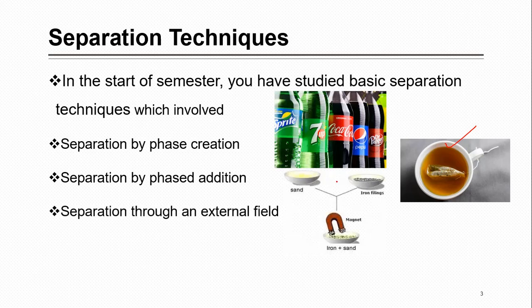There is also separation through an external field, where you apply some external field to separate a mixture. A common example from FSC class is using a magnet — the external field is magnetic, and with it you can separate iron filings from sand. On industrial scale, electrophoresis is used, which introduces external fields in nuclear and similar industries. Here you did not add any new phase or create one — you simply applied an external force.